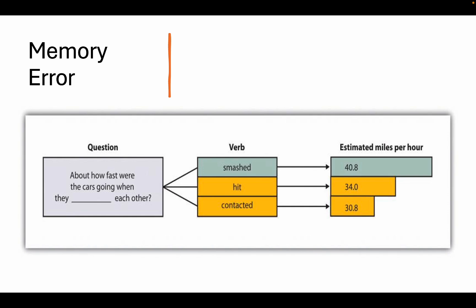Let's talk about some things that can impact your memory — memory error. There was a study conducted by Elizabeth Loftus in which she recruited a series of college students and had them watch a video of two cars hitting one another. Then a simple question followed: how fast were the cars going when they either 'smashed,' 'hit,' or 'contacted' one another? There's a big difference between the severity of the word 'smashed' versus 'contacted.'